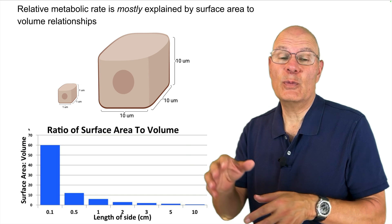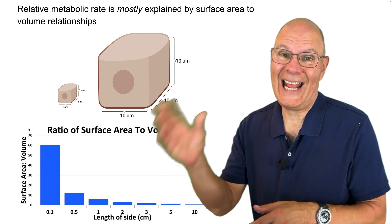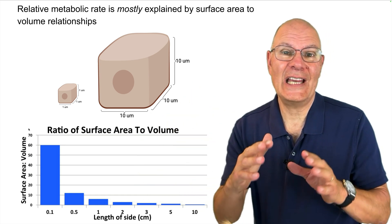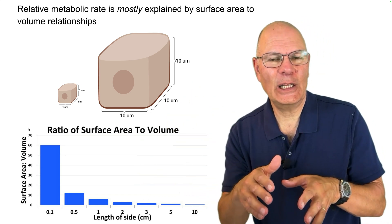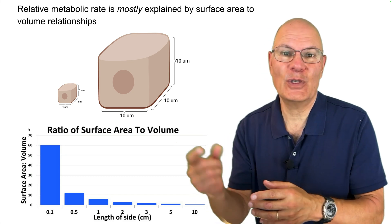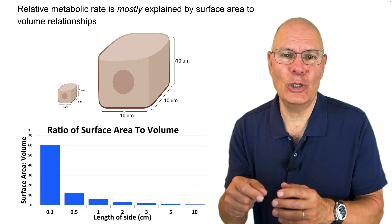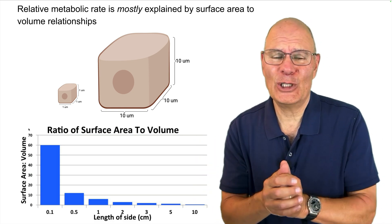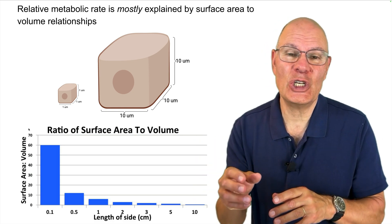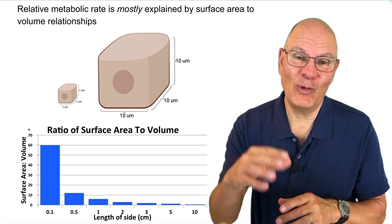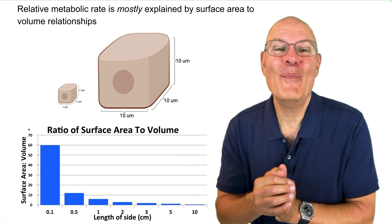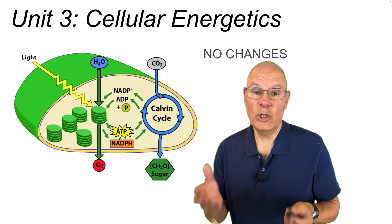The reason this topic was moved from Unit 8 to Unit 2 is that it's fundamentally related to surface area to volume, something you learn about in Unit 2, which explains so much about the relationship between form and function and many other things in biology.